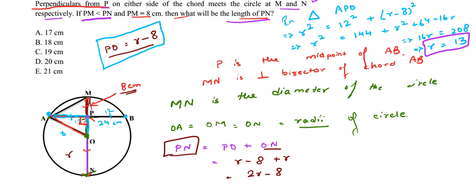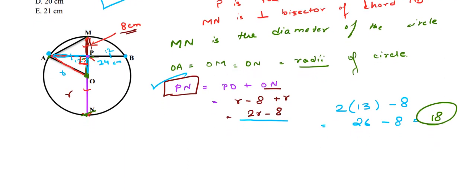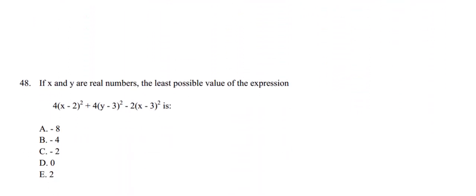Now we can find PN easily. PN equals 2r minus 8, which gives us 2 into 13 minus 8, that is 26 minus 8, which equals 18 centimeters. Option number B matches our answer, so option B is the correct answer. I will end this video here — you will find solutions to the further questions in our next videos.